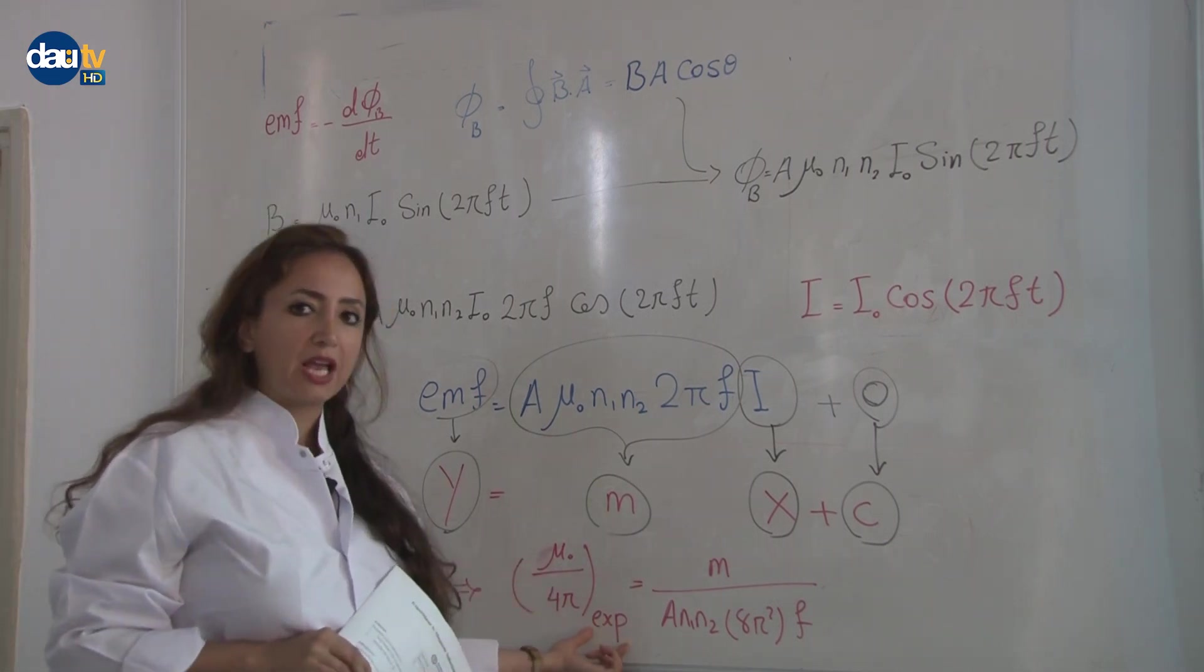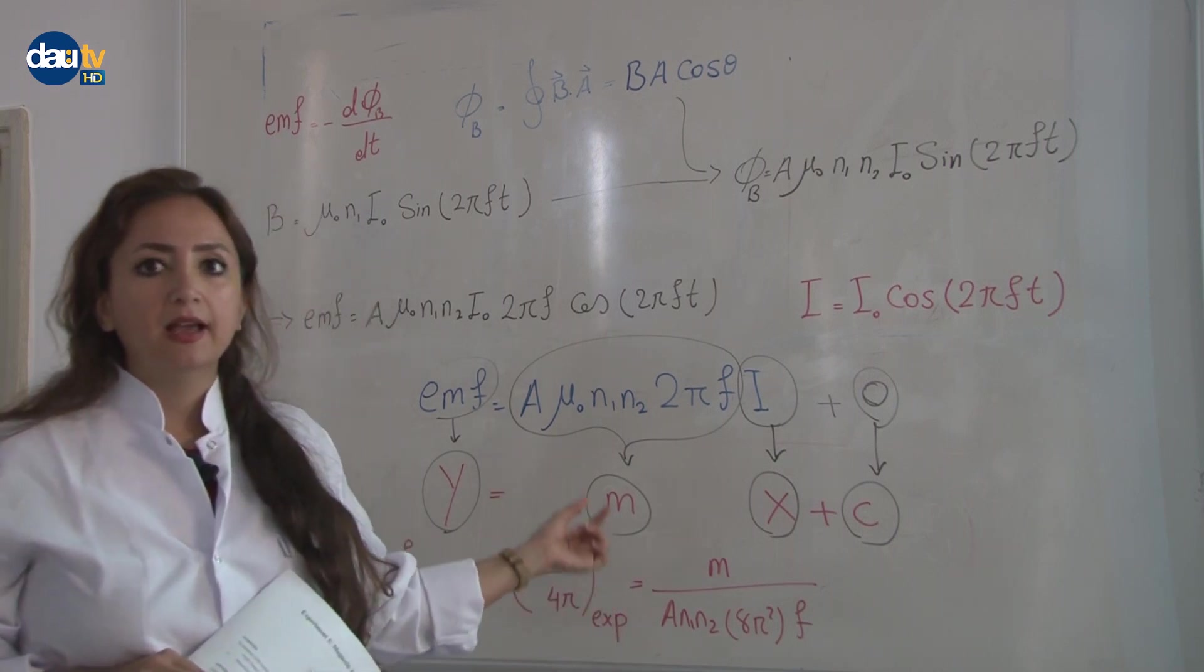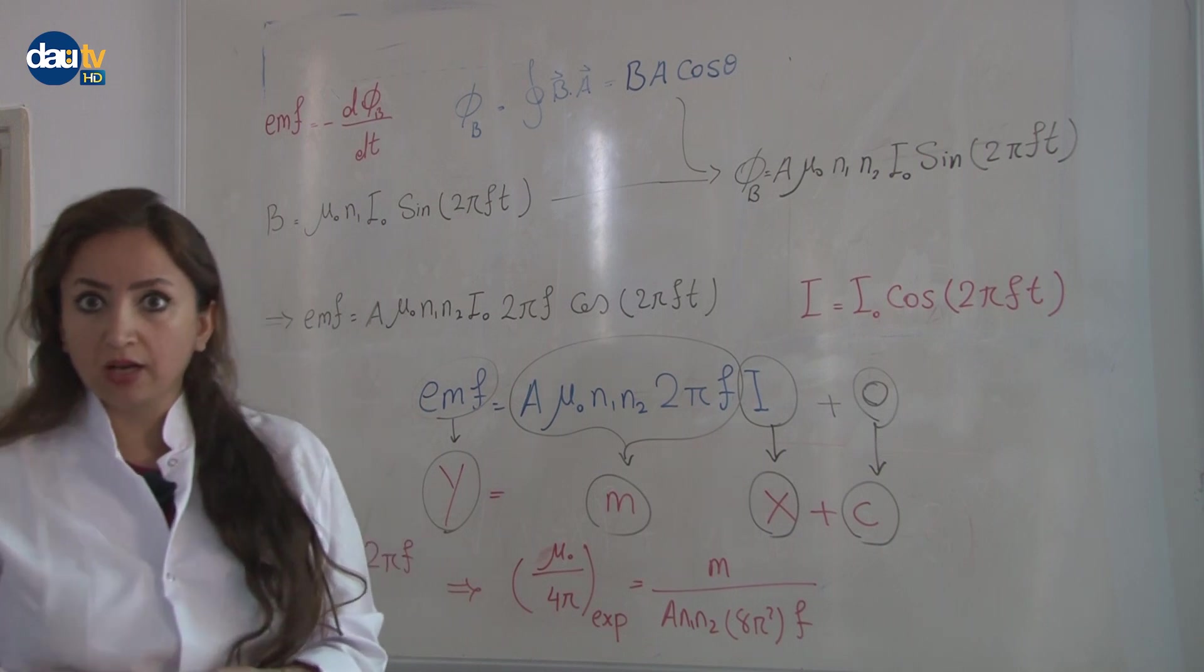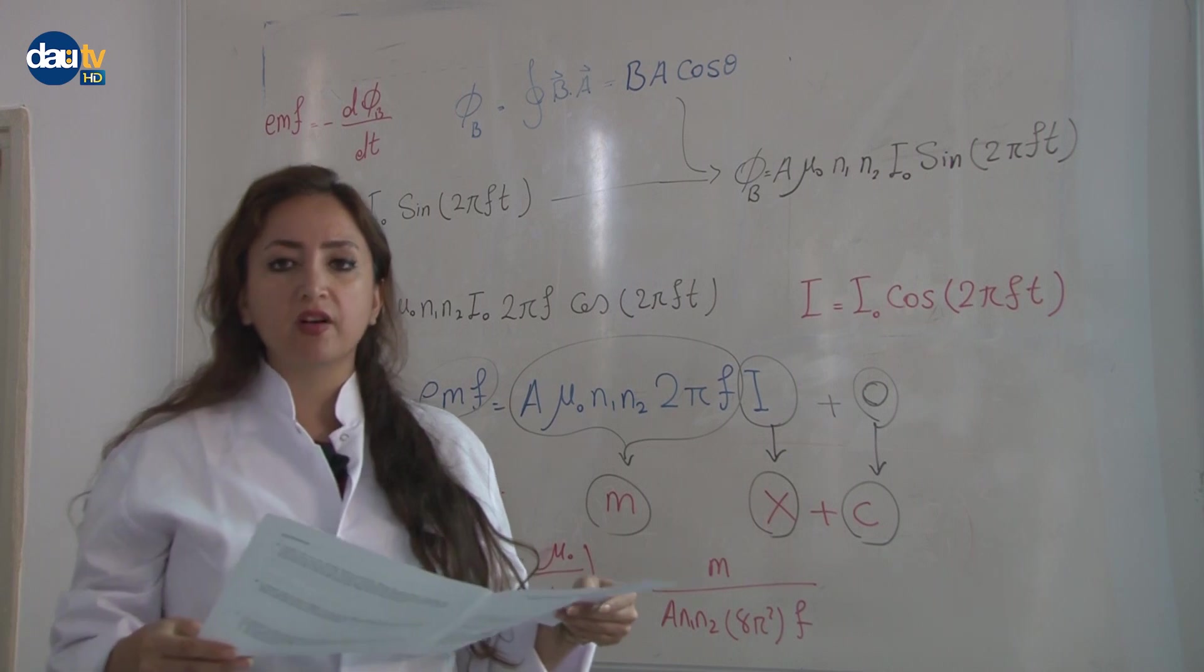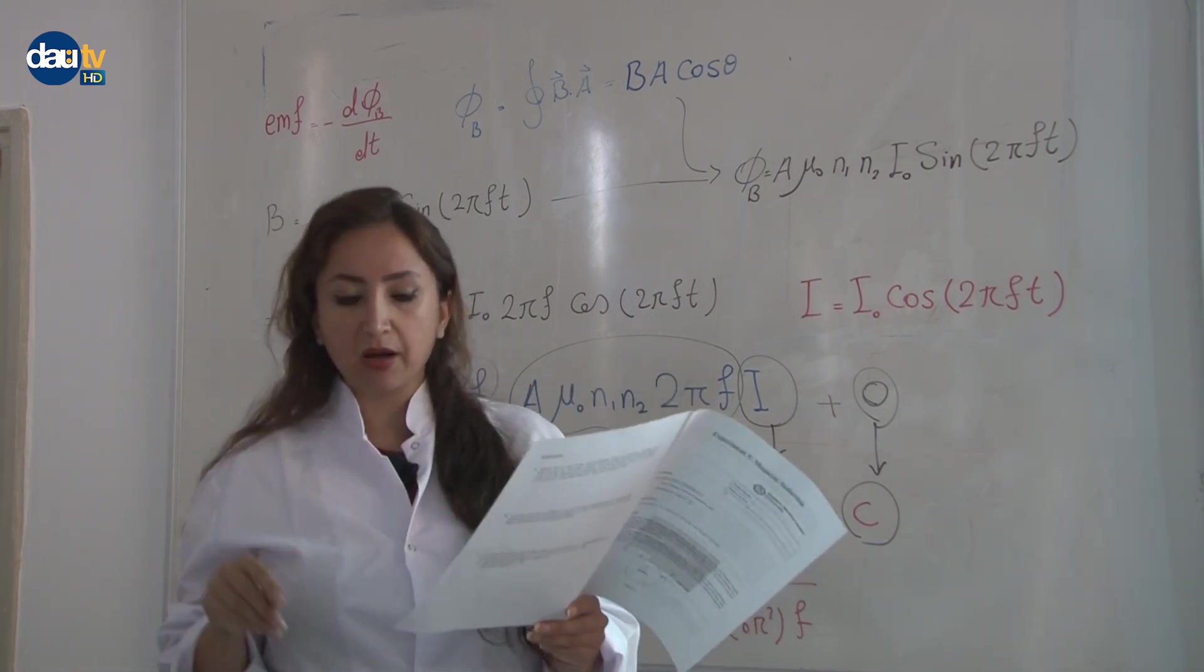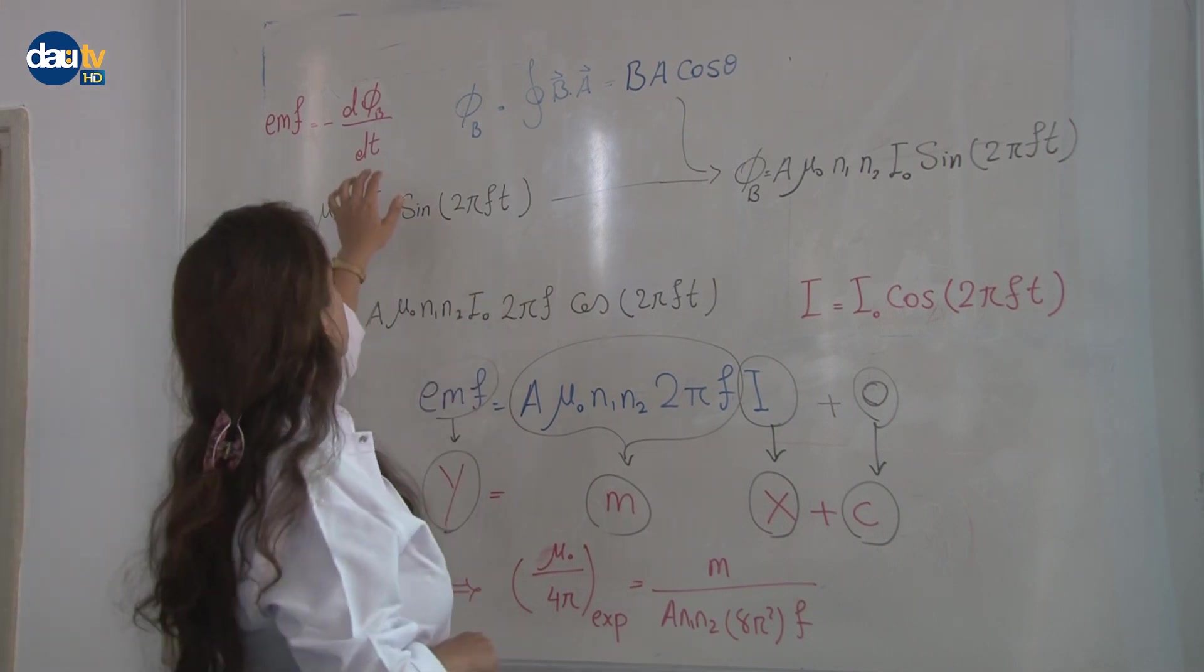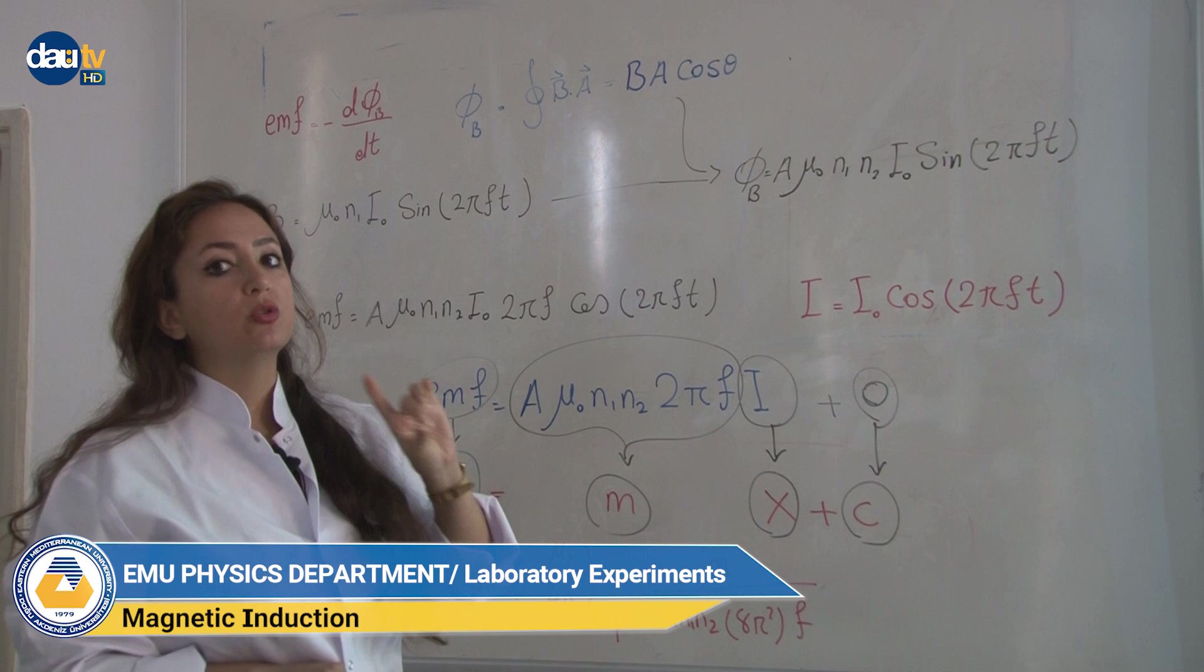As you see, I wrote exp means the experimental value for mu zero over four pi. The theoretical one, which we discussed in the first experiment, is about 10 to the power of minus seven tesla meter per ampere. I will remind you again the units.